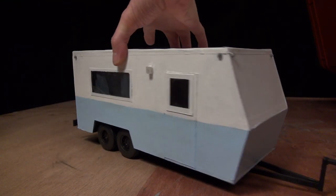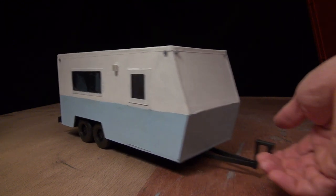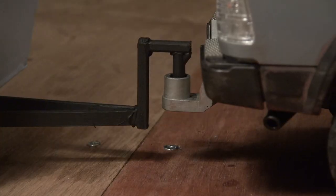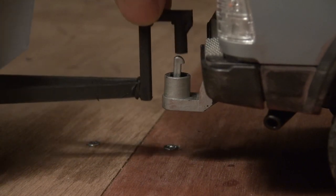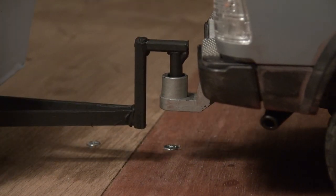On the front there, I just added a couple pieces of wood and a piece of a straw. It just kind of slides right over the trailer hitch on the truck, and we're ready to roll.